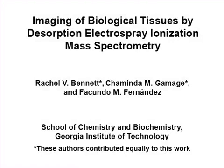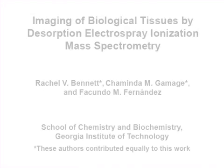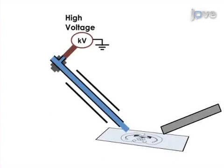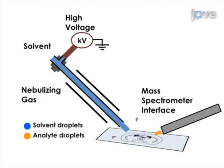The overall goal of the following experiment is to map the spatial distribution of chemicals in a biological tissue using an ambient mass spectrometry technique. This is achieved by using the pneumatically-assisted spray of DESI to desorb and ionize the molecules present in the tissue.